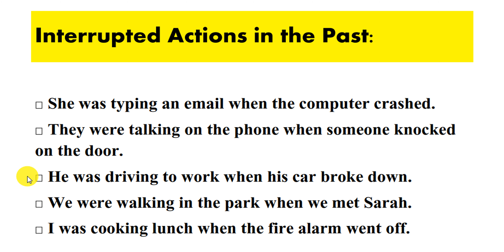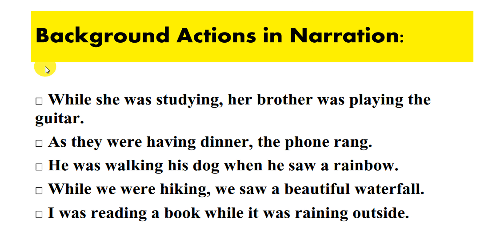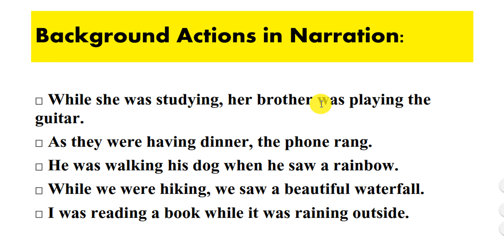The past progressive tense is used to express background actions and narration. For example: 'While she was studying, her brother was playing the guitar.'